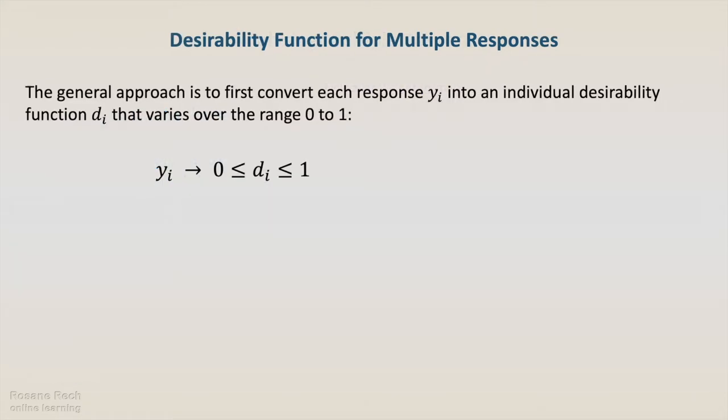The general approach is to first convert each response, yi, into an individual desirability function, di, that varies over the range 0 to 1.